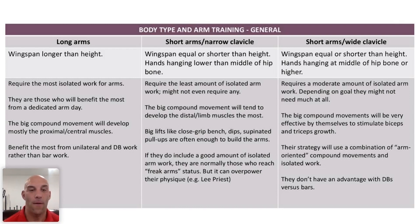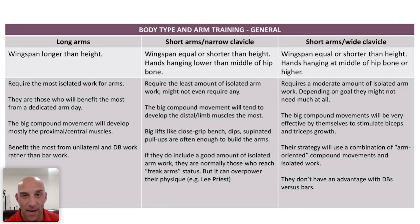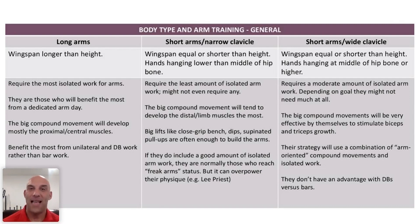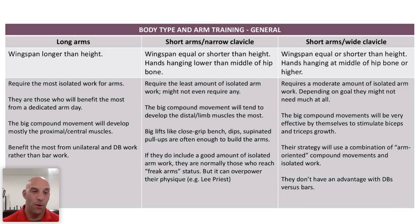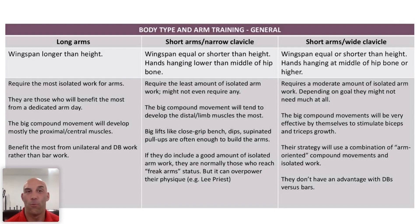For narrow clavicle, short-arm individuals, big compound movements are often all they need. The best choices would be close grip bench press, dips, supinated pull-ups, and neutral grip pull-ups. If they decide to add isolated work, they become true arm freaks — people whose arms grossly overpower the rest of their body. Lee Priest is the best example: very narrow shoulders, very short arms, and he trained arms like any body part, which gave him arms of 21.5 to 22 inches at five foot two.